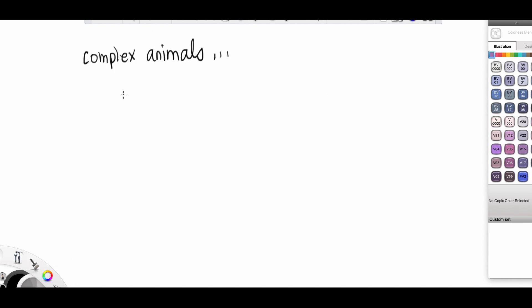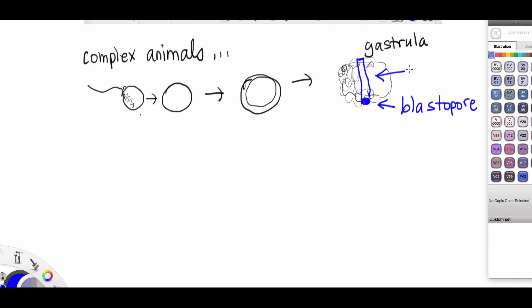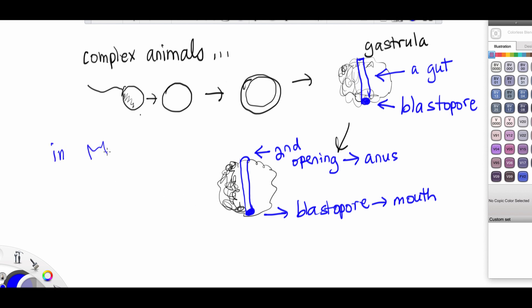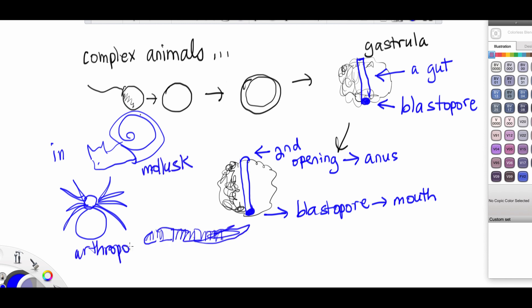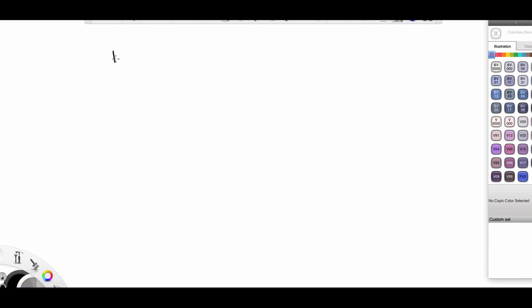In more complex animals, when the gastrula forms, it forms a blastopore and a gut. And then, eventually, it forms a second opening. And this second opening eventually becomes the anus of the animal. This is true in mollusks, in arthropods, in earthworms, and in other invertebrates.